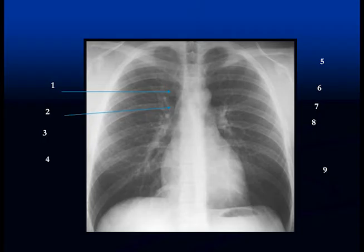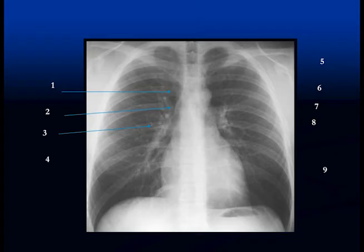The next structure is this little almond-shaped structure just above the right main stem bronchus — this is the azygous vein. The azygous vein is an alternate pathway for blood to flow from below the diaphragm up into the heart, and it actually empties into the superior vena cava.